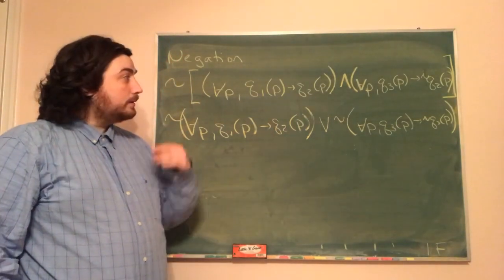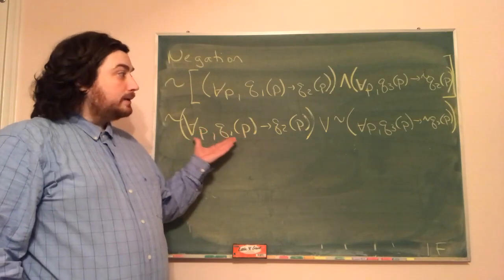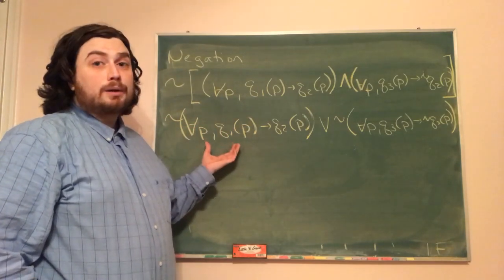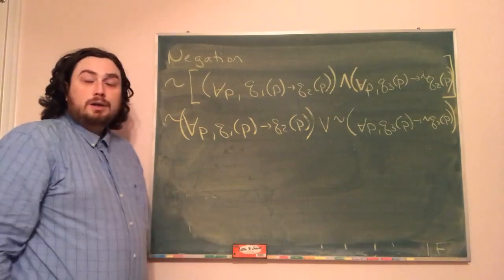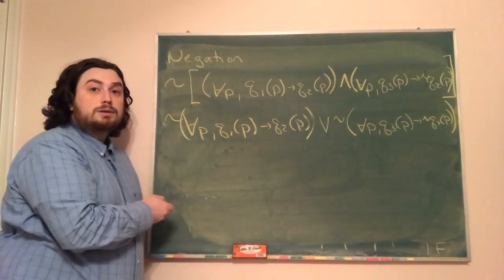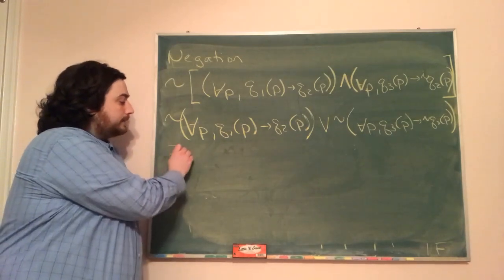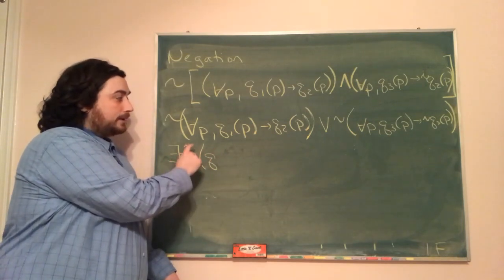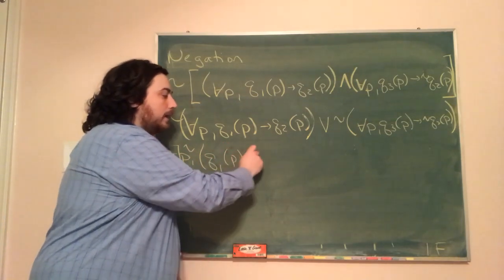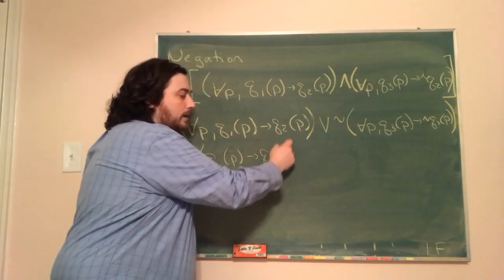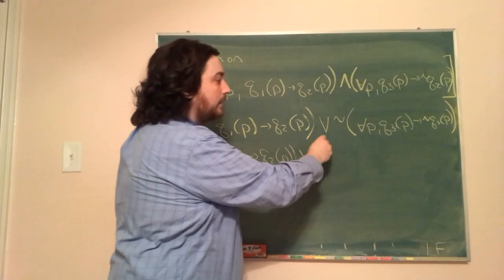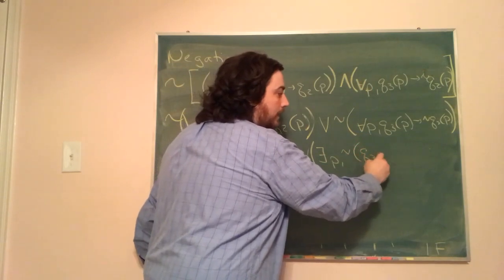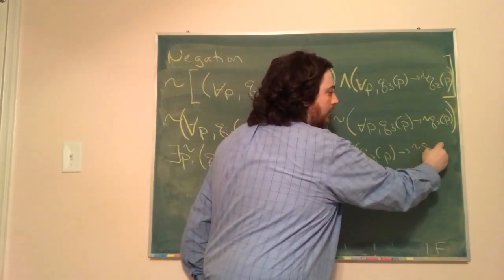Now that we've distributed across the AND and made it an OR, we have simpler problems to deal with. Looking at this first statement, I notice that we have a 'for all.' When we're negating a 'for all,' the 'for all' becomes a 'there exists,' and then we negate the remaining statement. So we have: there exists a P such that ¬(Q₁(P) → Q₂(P)). And doing the same thing on the other side, we get: there exists a P such that ¬(Q₃(P) → ¬Q₂(P)).